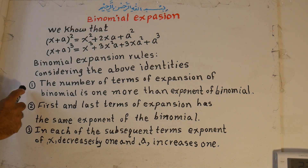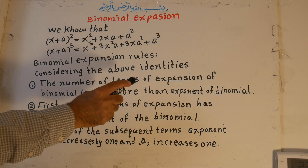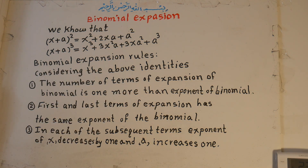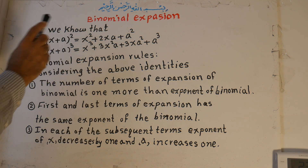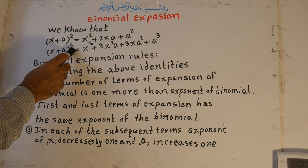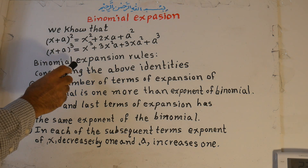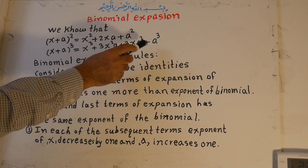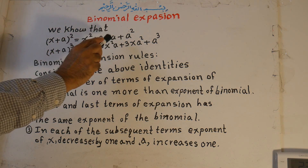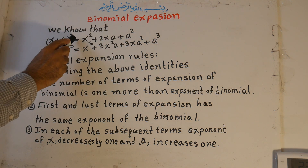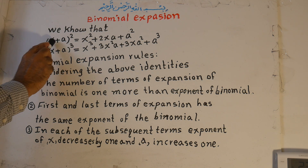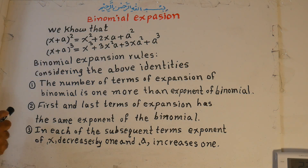Rule number one: the number of terms in the expansion of a binomial is one more than the exponent of the binomial. Here the exponent is 2 and there are three terms. Here the exponent is 3 and the number of terms is four. The number of terms is always one more than the exponent. Binomial means two terms: x is one term and a is another term.